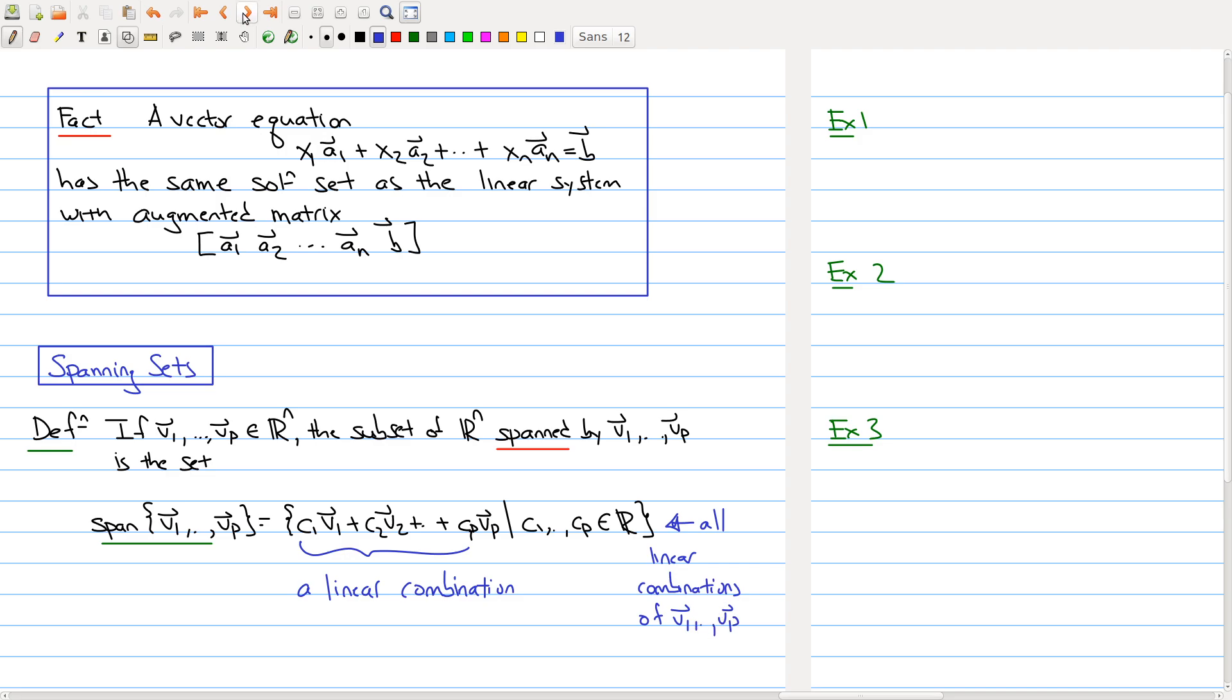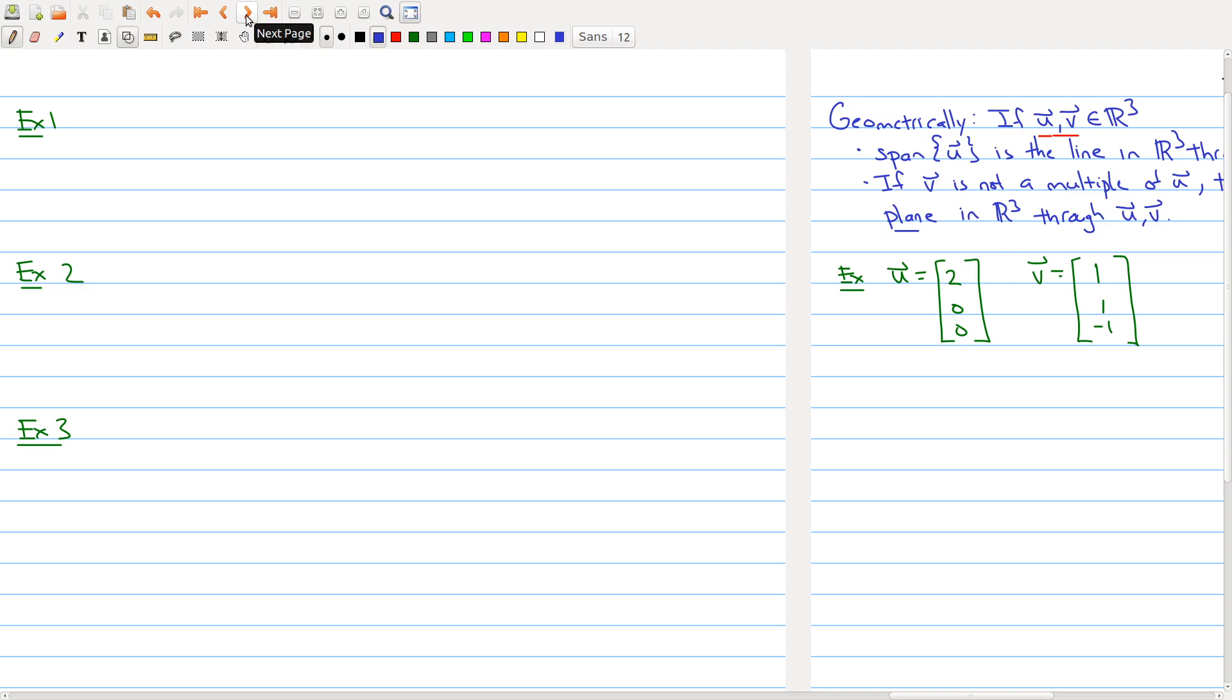Let me give you a couple examples to help build your intuition. The first one shows an example of something belonging to a span. Minus 3, 11 belongs to the span of the two vectors 6, -1 and -3, 4. Why does it belong?